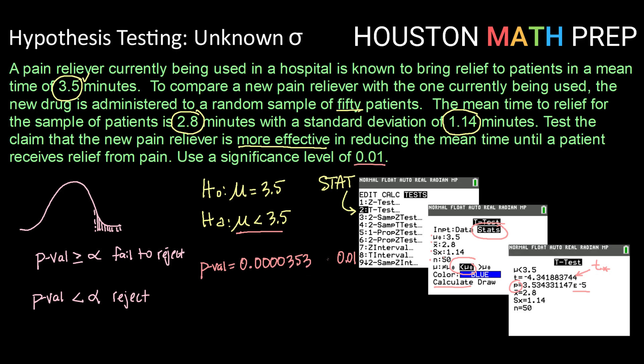So we want to compare that to our significance or alpha level of 0.01. Well, certainly this p-value is much smaller than 0.01. So with a p-value that is low, we will reject our null hypothesis.